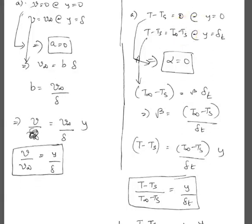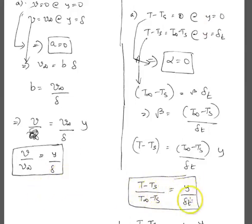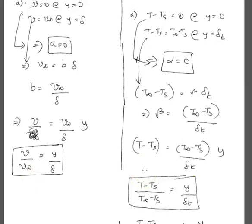Using these two boundary conditions you can solve for the temperature profile. The relationships are very similar: the reduced temperature is y over delta-T, and the reduced velocity is y over delta. Now you have a profile for both velocity and temperature — let us go on and calculate what the heat transfer coefficient h is going to be.